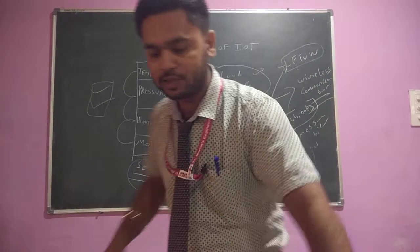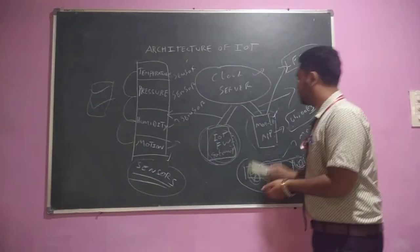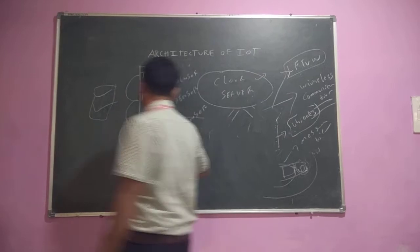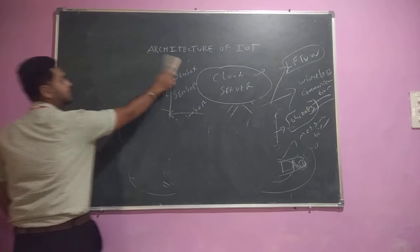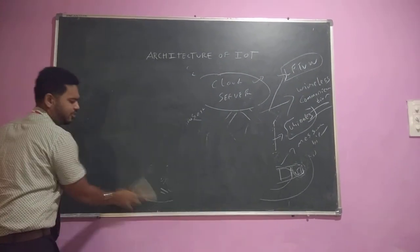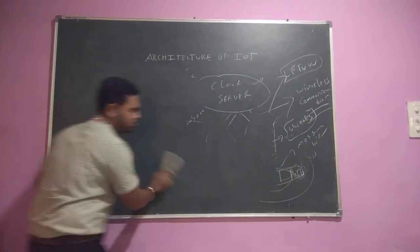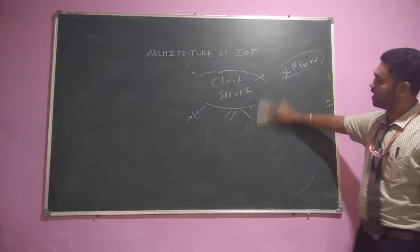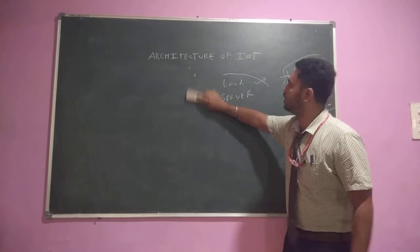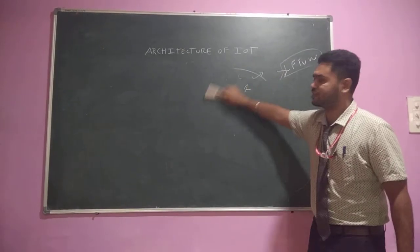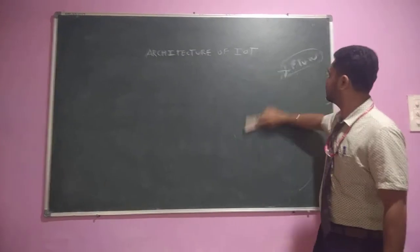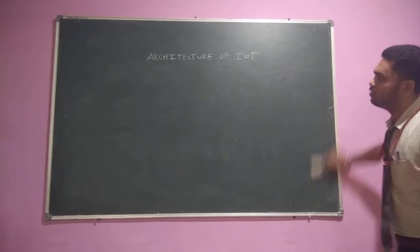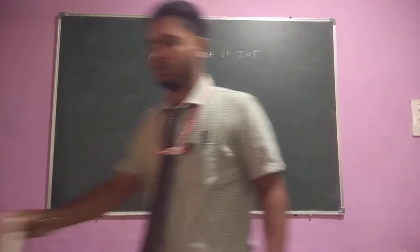Now coming to the next topic, I am going to explain the functional block diagram of IoT. You might be wondering what is the main difference between architecture and the functional block diagram of IoT. Both are the same, but the main difference is that in architecture you are watching only the external view, whereas in the functional block diagram you also see the internal view — how it is functioning.